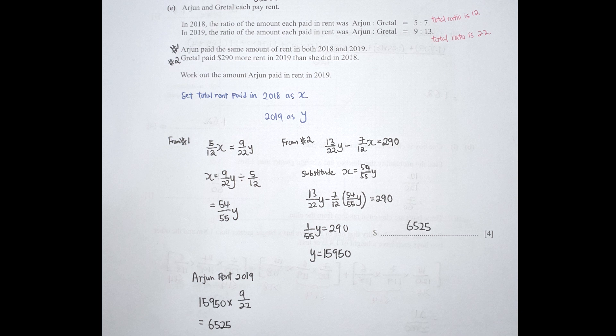For the next condition, Gretel paid 290 more rent in 2019 than in 2018. So 13 over 22 Y minus 7 over 12 X equals 290. By substituting X equals 54 over 55 Y into the equation, you get 1 over 55 Y equals 290. So Y equals 290 multiplied by 55, which is 15,950. Arriving here secures 3 marks. The final mark comes from calculating Arjun's 2019 rent: 15,950 times 9 over 22 gives 6,525.